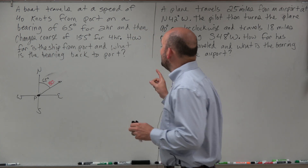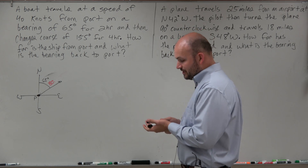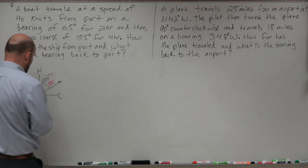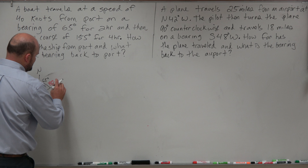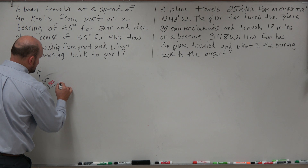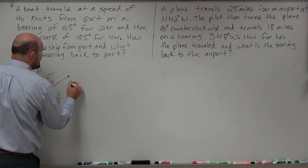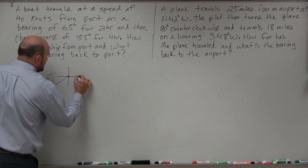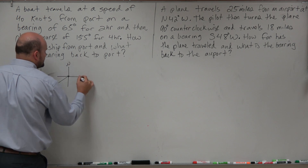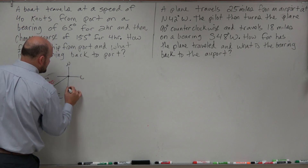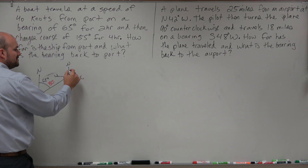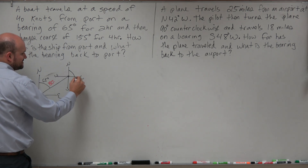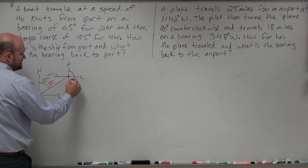Then the boat changes course at a bearing of 155 degrees. That's a new bearing, so I create another north, east, south, west compass at the new position. From due north, here's 90, here's 180, so 155 degrees is going to be somewhere like this.